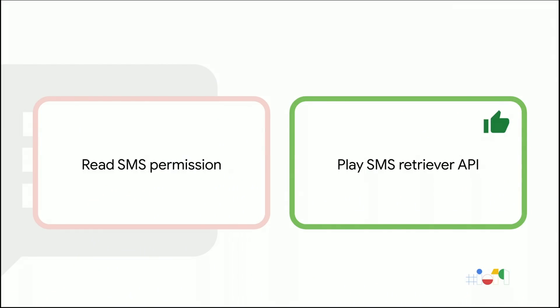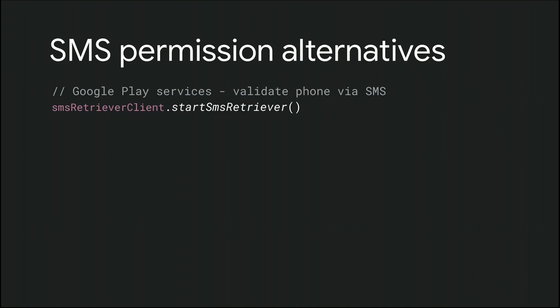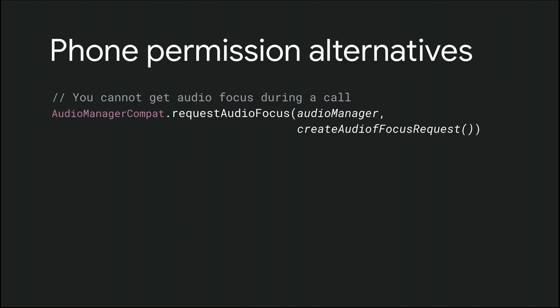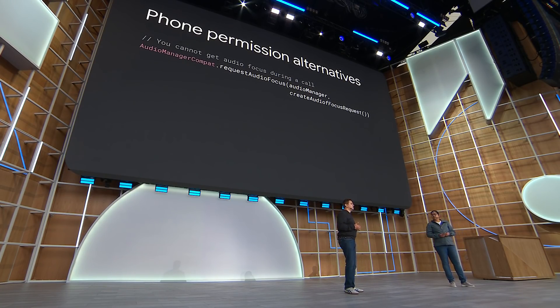Let's go through a few examples. If your app needs to do SMS verification, instead of asking for the SMS runtime permission, you can use the SMS Retriever API. SMS verification is a common use case — Google Play Services has a dedicated API for exactly this. The entry point is the SMS retriever client and the main method is startSmsRetriever. Another example: if your app needs to know if the user is in a phone call, instead of asking for the READ_PHONE_STATE permission, you can call the audio focus API to check call state. If the user is in a phone call, you will not be able to gain audio focus. Use AudioManagerCompat and the requestAudioFocus method.